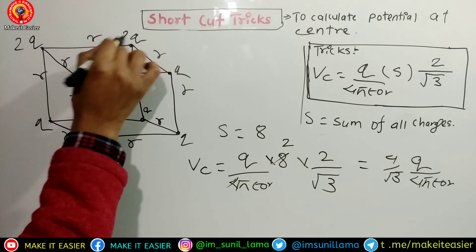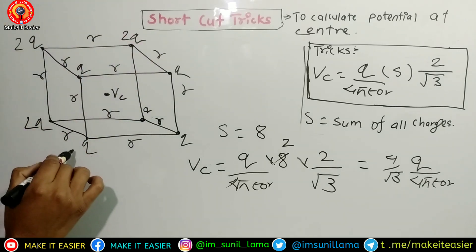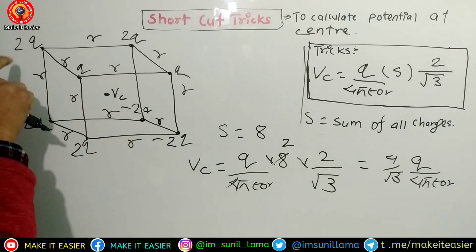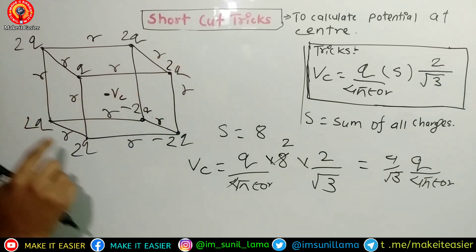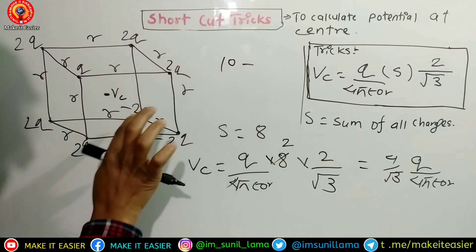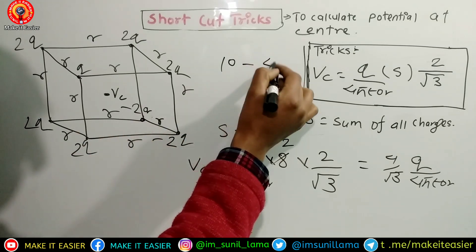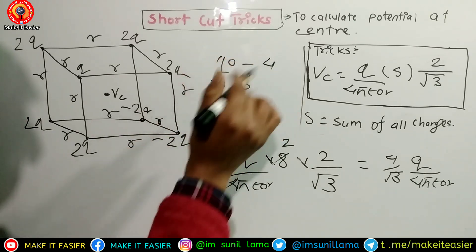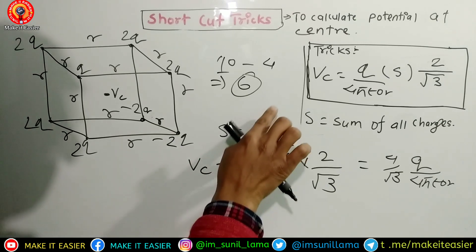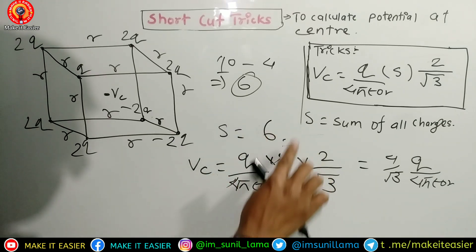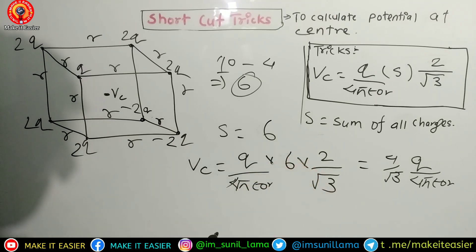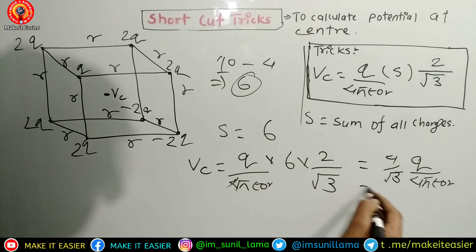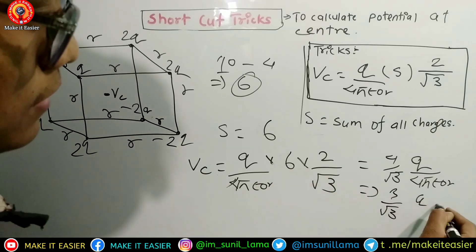Now suppose we have mixed charges for the cube: some are plus 2q and some are minus. Counting terms: one, two, three, four, five positive and the rest negative — ten minus four equals six, minus six; so net sum is six. Six times two gives twelve; three by root three. The answer is 3√3·q/(4πε₀r) — or equivalently 3/(√3) · q/(4πε₀r).